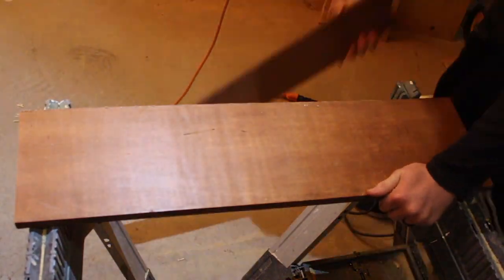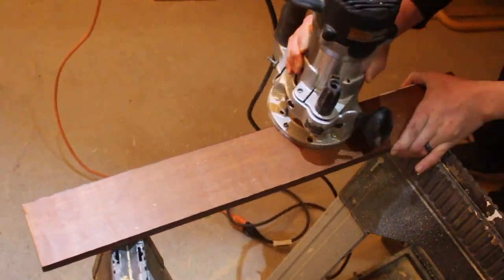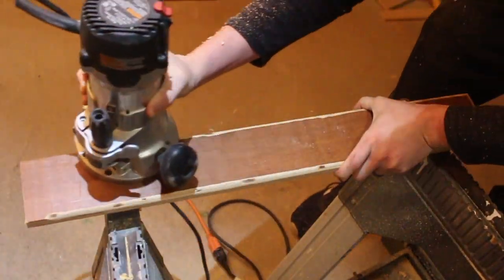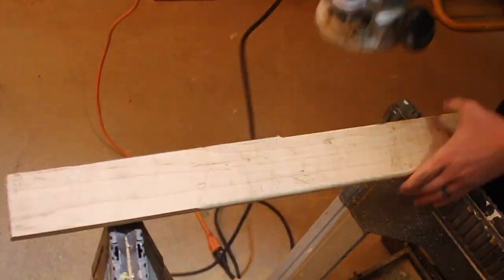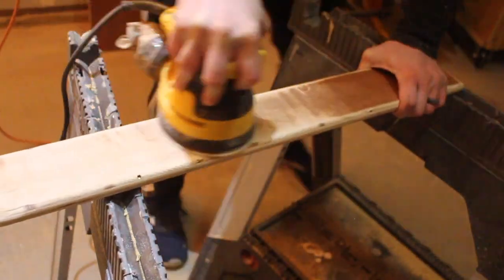What this string jig will allow you to do is to get consistent repeatable results while making Flemish twist bow strings. It saves so much time when making a bow string and it saves all the math and guesswork out of it. All you've got to do is do the math once to make this jig and then you're good to go.